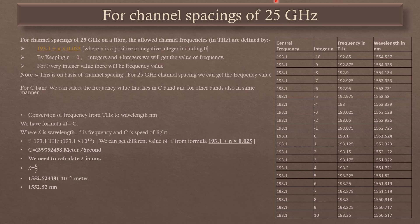For a channel spacing of 25 GHz, applying the same formula, we keep N equal to 0, plus 1, plus 2, plus 3, minus 1, minus 2, minus 3. With N equal to 0, we get the center frequency 193.1 THz. With N equal to plus 1, we get 193.125 THz; with N equal to minus 1, we get 193.075 THz. We convert each frequency to its corresponding wavelength using lambda equals C over F.